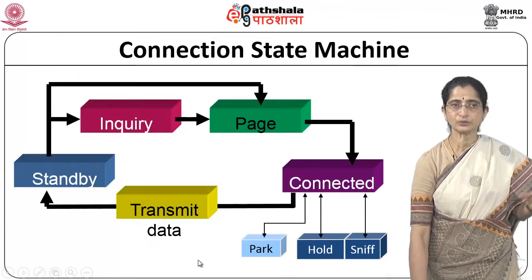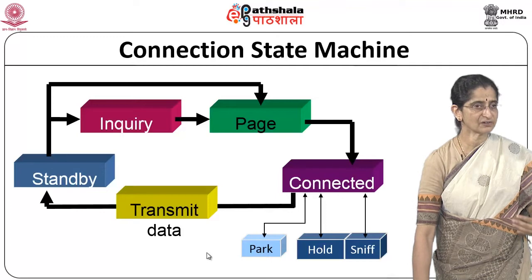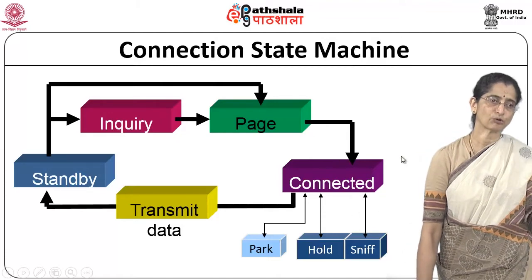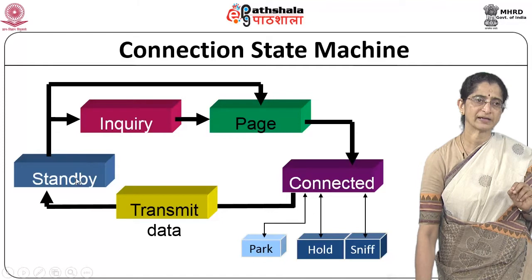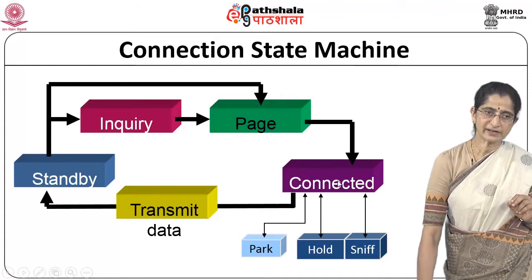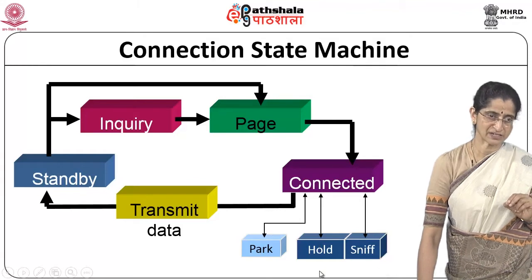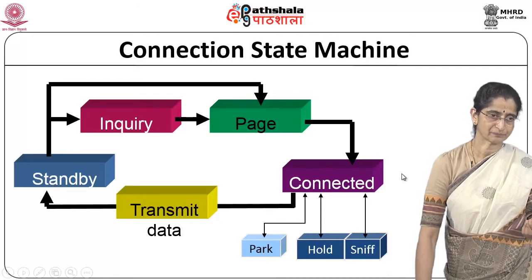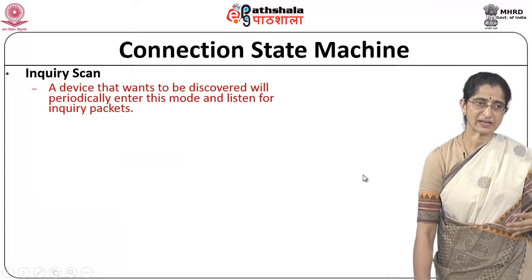The connection establishment uses an interesting state machine to control how the master and slaves discover each other, connect, and start sending data. The major states are: standby, inquiry, page, and connected. From standby, through inquiry and page states, a device moves into the connected state. Once connected, it can be in a parked mode, hold state, or sniff state, and after transmitting data it can return to standby.